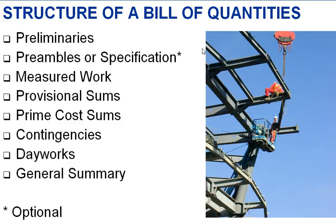Then we have the preambles or specification. Preambles would be an optional aspect, as nowadays this is being replaced by specification documents. So there will be the mechanical and electrical specifications, the structural specifications, specifications for furniture, the architectural specifications, and specifications for any aspect of the works.